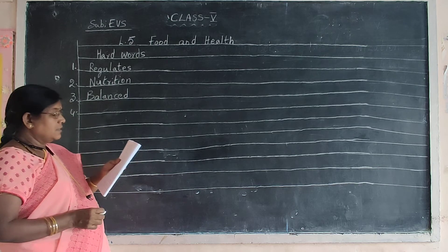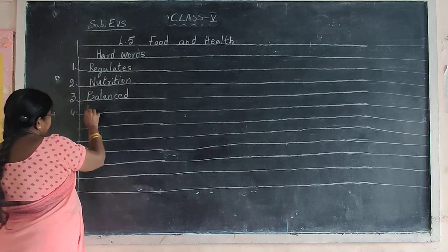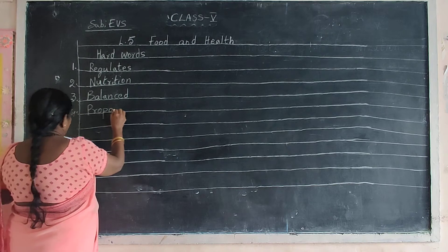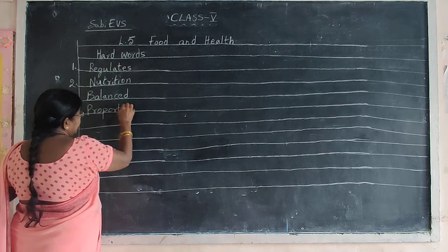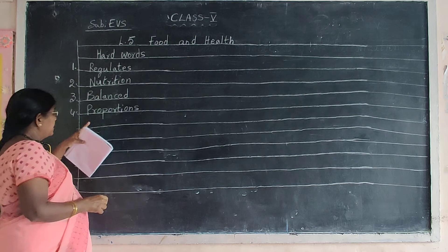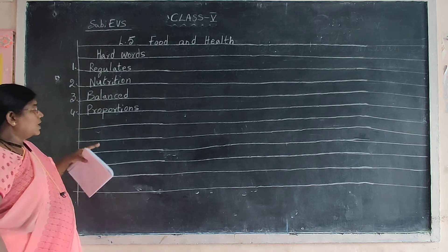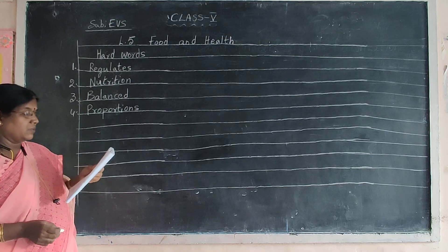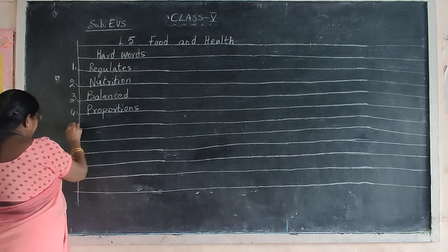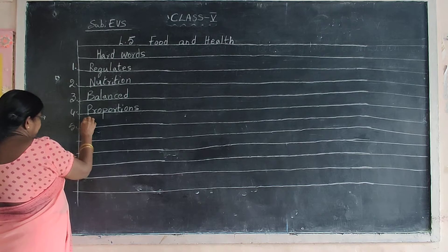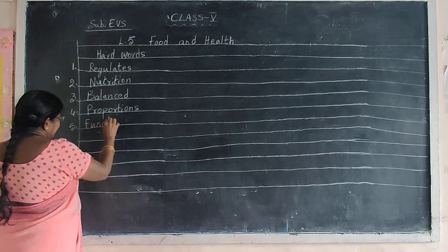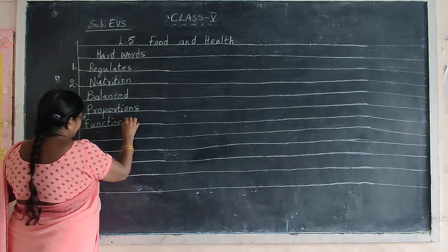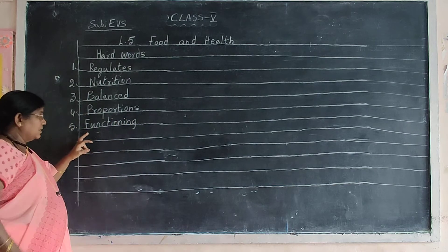Fourth one. Put four in the margin. Proportions. P-R-O-P-O-R-T-I-O-N-S. Proportions. Fifth one: Functioning. F-U-N-C-T-I-O-N-I-N-G. Functioning.